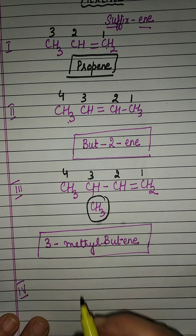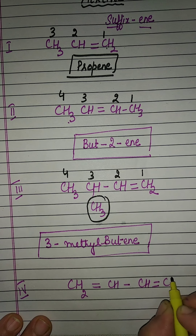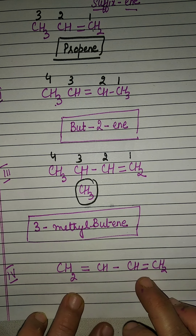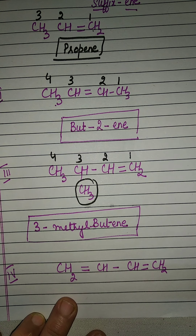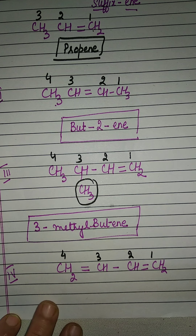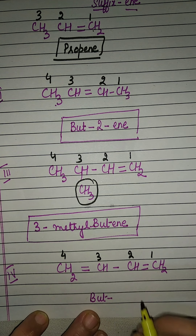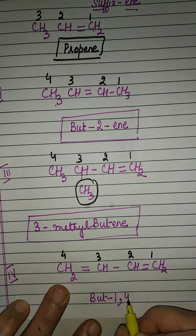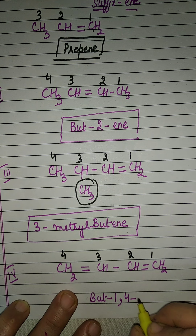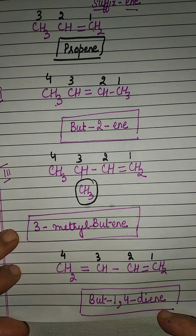Let's take another example. Suppose the compound is CH₂=CH–CH=CH₂. In this compound, there are 2 double bonds present at 2 different positions. From either side, we number 1, 2, 3, 4. The word root is again 'bute'. Since double bonds are at positions 1 and 4, we write 'buta-1,4-'. Because 2 double bonds are present, we use the word 'di', then the suffix 'ene'. So the name is buta-1,4-diene. If 2 double bonds are present, 'di' is used; if 3 are there, 'tri' is used.